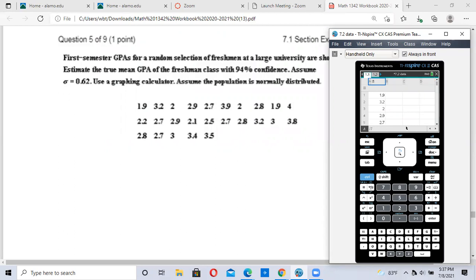We're going to create a new page, add calculator. We have our data page and our calculator page. We're going to do the same thing. Go to menu, number 6 statistics, number 6 confidence interval, number 1 Z interval. This time we have data, so we leave the data there. We have 25 pieces of data. We hit OK.